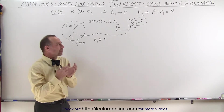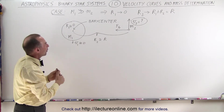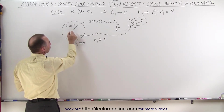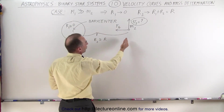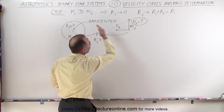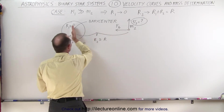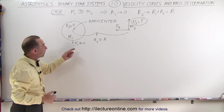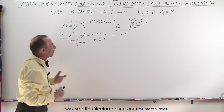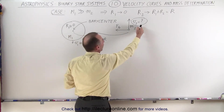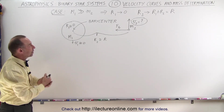But what happens if we have the case where the mass of the large object is much, much greater than the mass of the small object, such that R1 — the distance from the barycenter to the center of mass of the large object — approaches zero? Therefore the distance of the small object to the barycenter is roughly the same as the distance from the small object to the center of mass of the large object. So essentially the velocity of the large object around the barycenter becomes virtually zero, and how do we determine the velocity of the small object and find some sort of mass relationship?